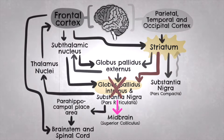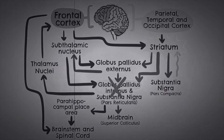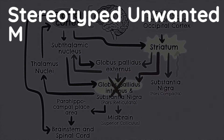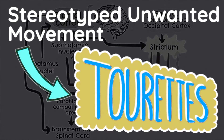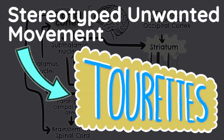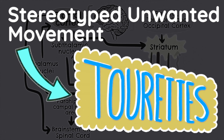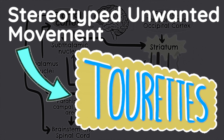If a specific set of striatal neurons were to become overactive in discrete, repetitive episodes, the result would be a repeated, stereotyped, unwanted movement — or a tic.